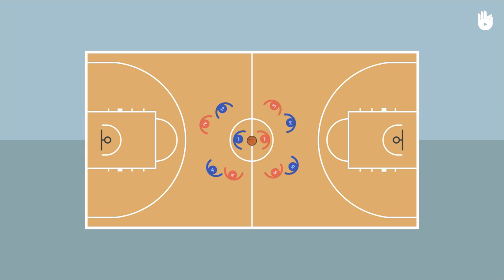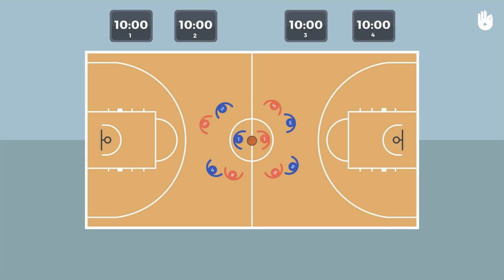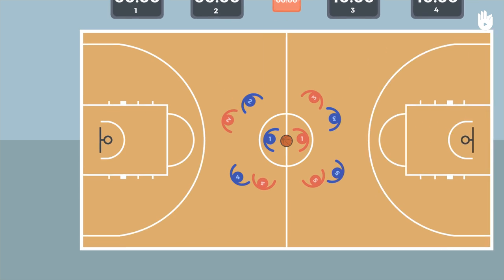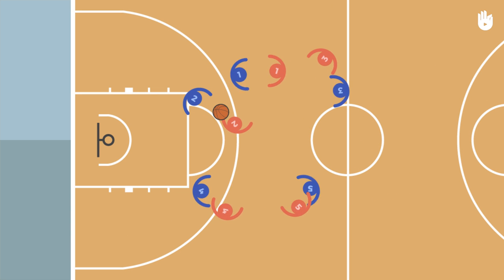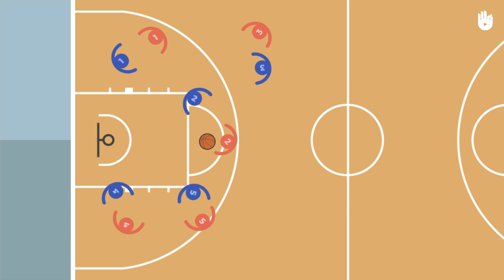Two teams of five players compete over four quarters of 10 minutes each. A 15-minute halftime takes place between the second and the third quarter. The objective of both teams is to put the ball through the opponent's hoop to score as many points as possible.